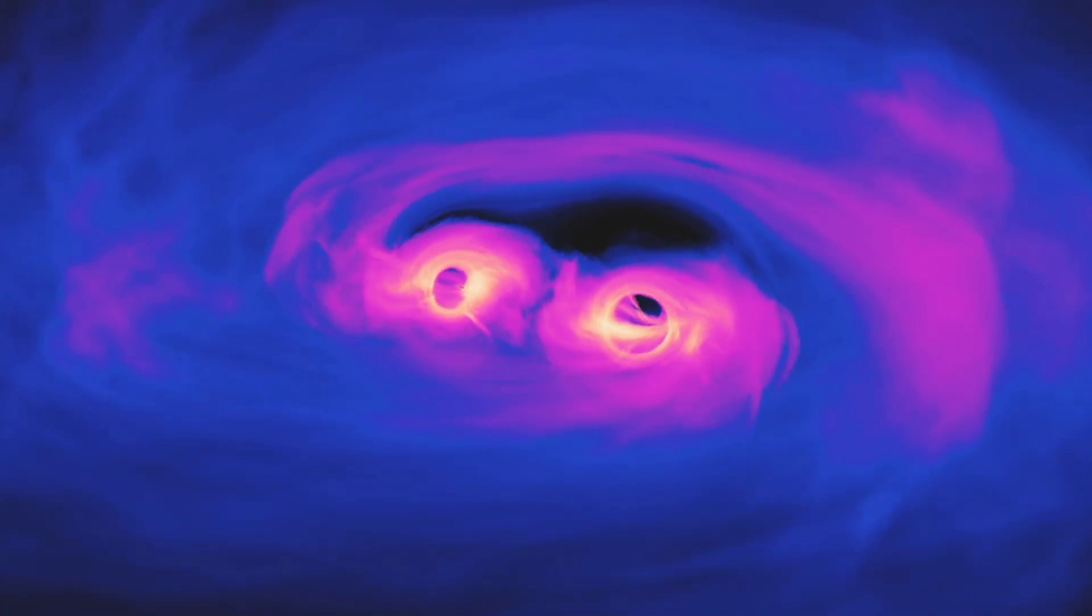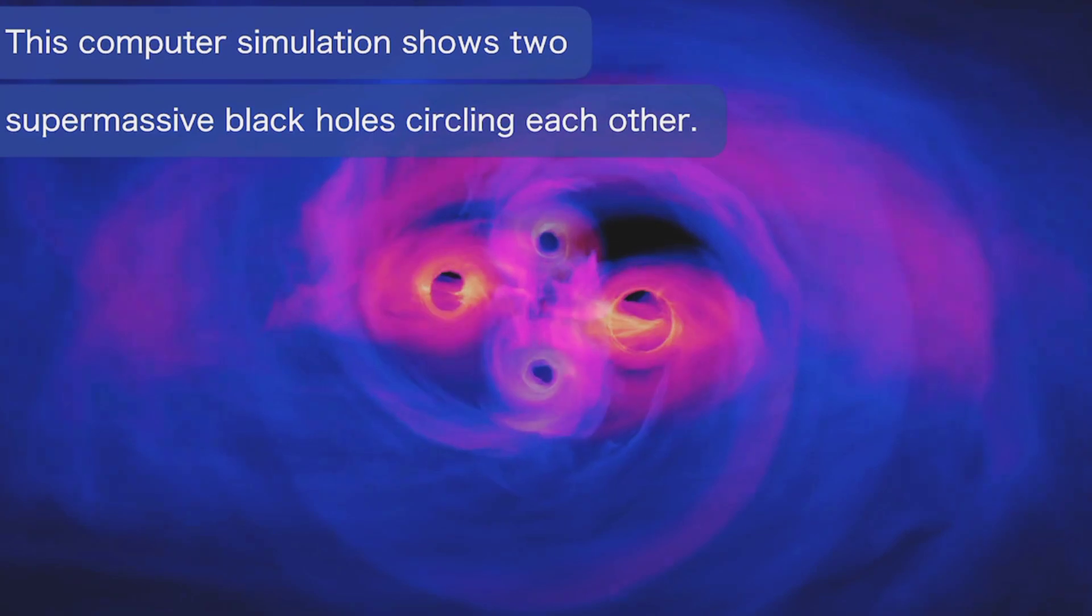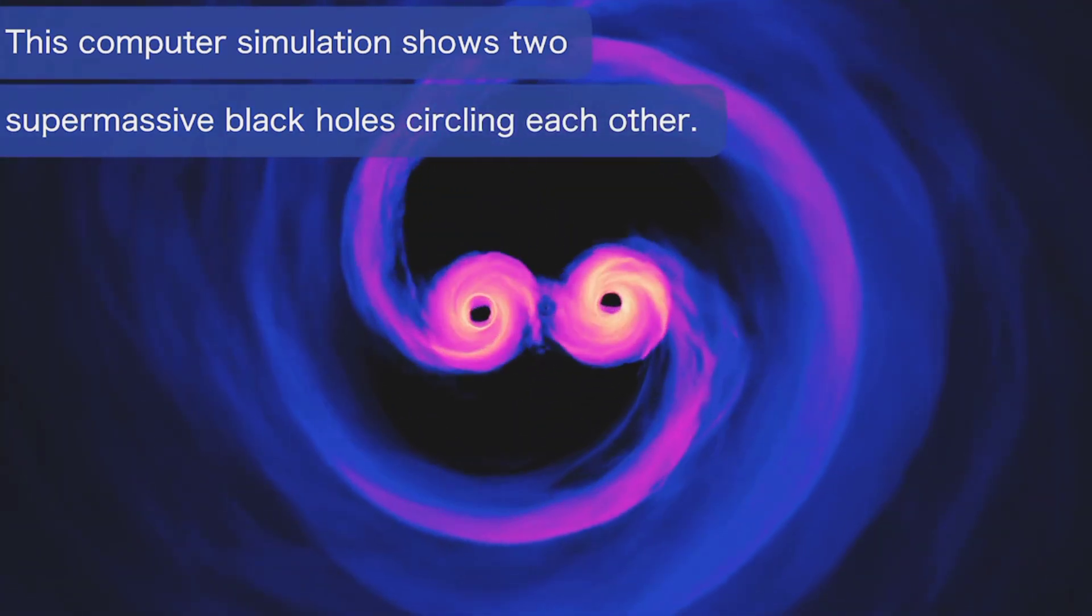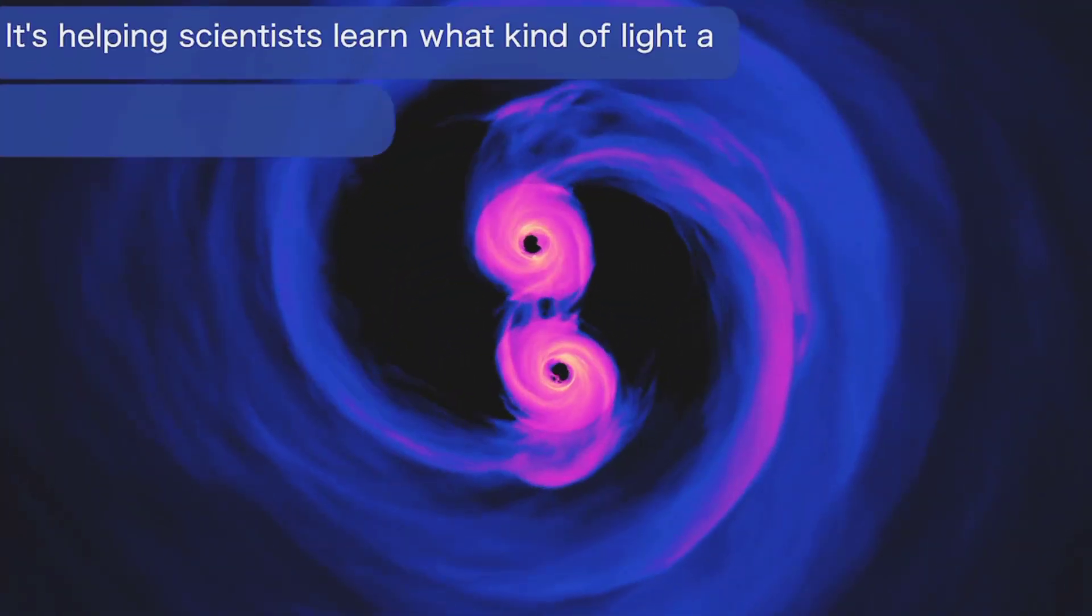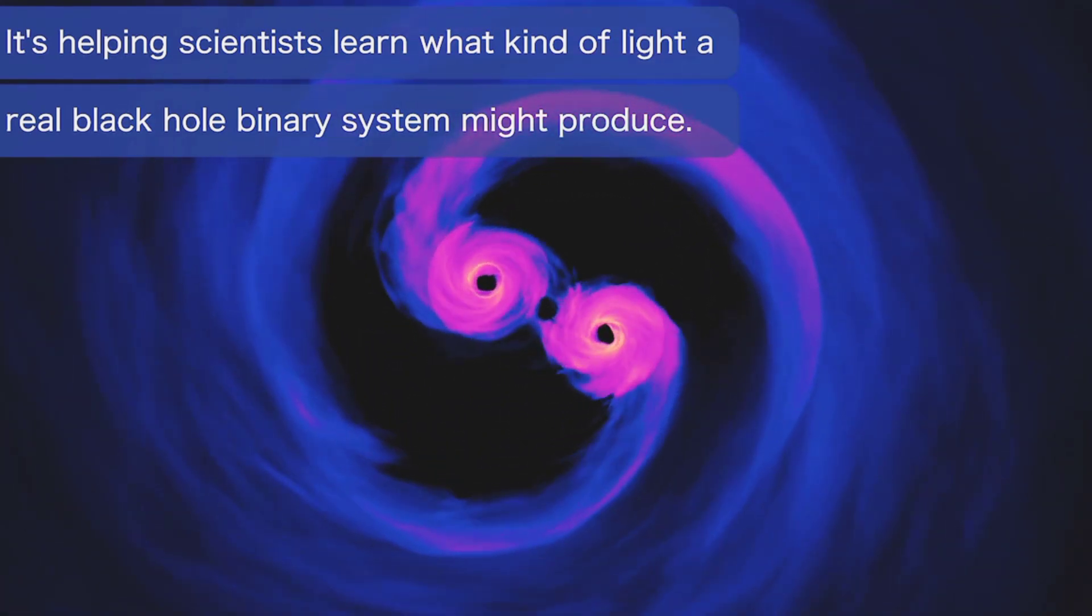Scientists are one step closer to understanding the cosmic light show that occurs when two supermassive black holes, each hundreds of millions to billions of times the mass of our sun, crash toward collision.